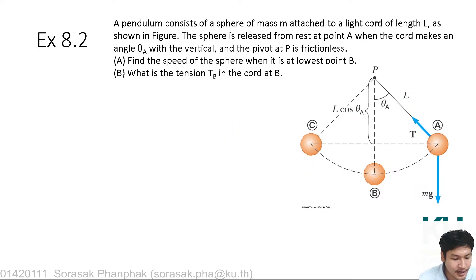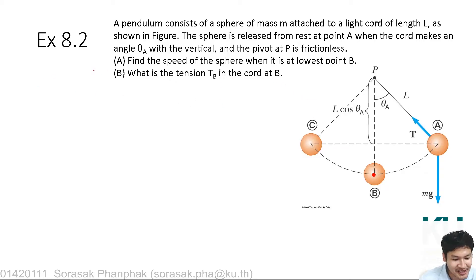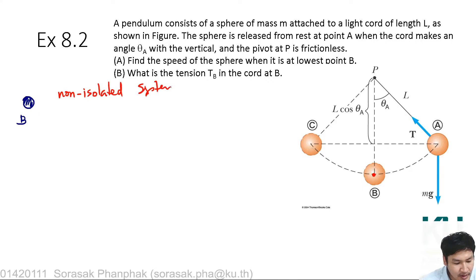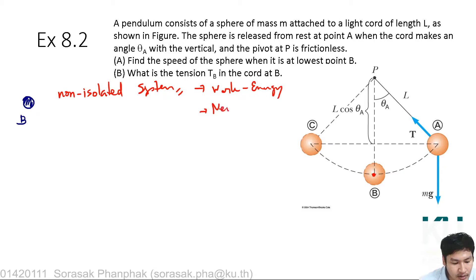If you would like to find the tension in the cord at position B, you now have to consider the system differently — not the whole system. As we did in the previous example, you will look at only the ball at position B. Rather than an isolated system, this is a non-isolated system. You can use work-energy methods or Newton's laws to solve this problem.